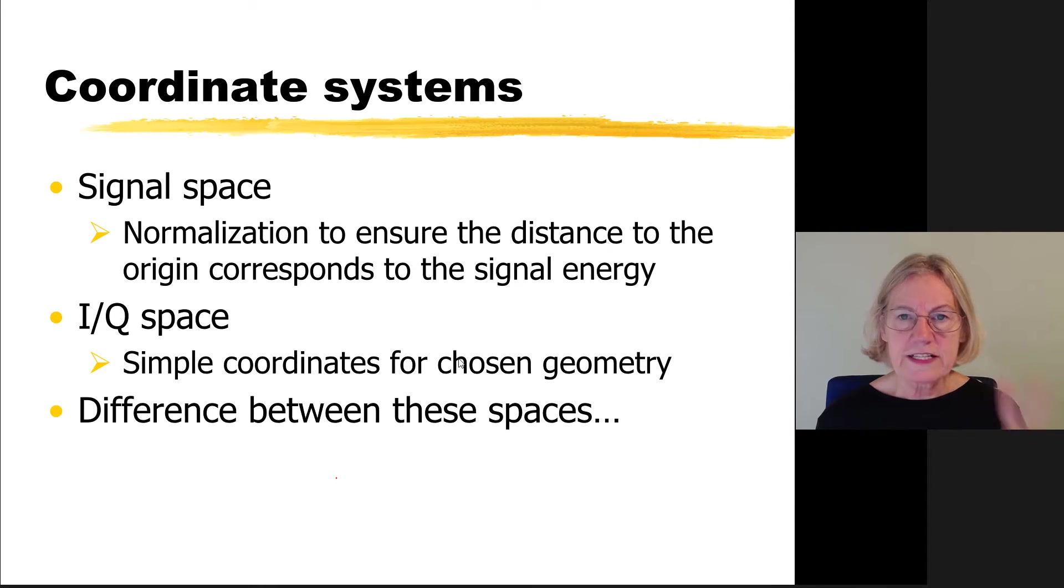So two coordinate systems. In the signal space, the normalization ensures that the distance to the origin corresponds to the signal energy in terms of Eb or Es. IQ space, I don't have any normalization. I just pick something that's easy, simple coordinates for the chosen geometry. And what is the difference between these two spaces? Well, you look at them and at face value they look identical. The only difference between them is a normalization. And so I might take a few minutes now to just go over what would the correct normalization be, how could I go about it.